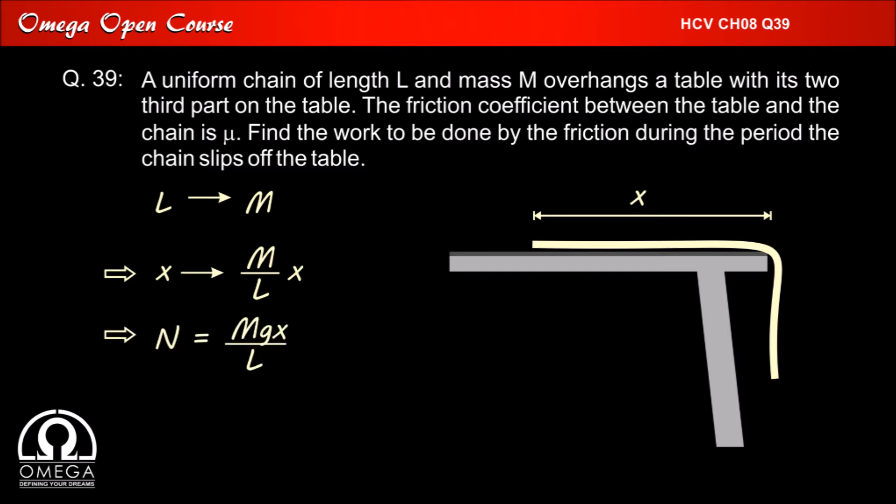Thus the weight of the part of chain on the table is Mg x by L. This weight is equal to normal applied by the surface on the chain. Now the force of friction F on the chain by table must be equal to mu n, that is F is equal to mu Mg x by L.